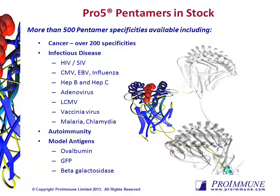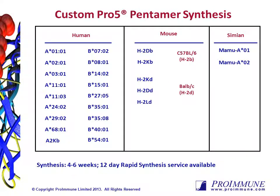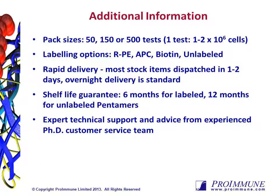Many pentamers are available for dispatch within one to two days of your order. For any specificities not on our stock list — for example if you are validating a novel epitope — we also have an experienced custom pentamer synthesis capability. We offer synthesis on a large range of alleles shown in the table on this slide. Synthesis takes approximately four to six weeks, and we also have a rapid synthesis service of 12 working days. Pentamers are available in pack sizes of 50, 150, and 500 tests.